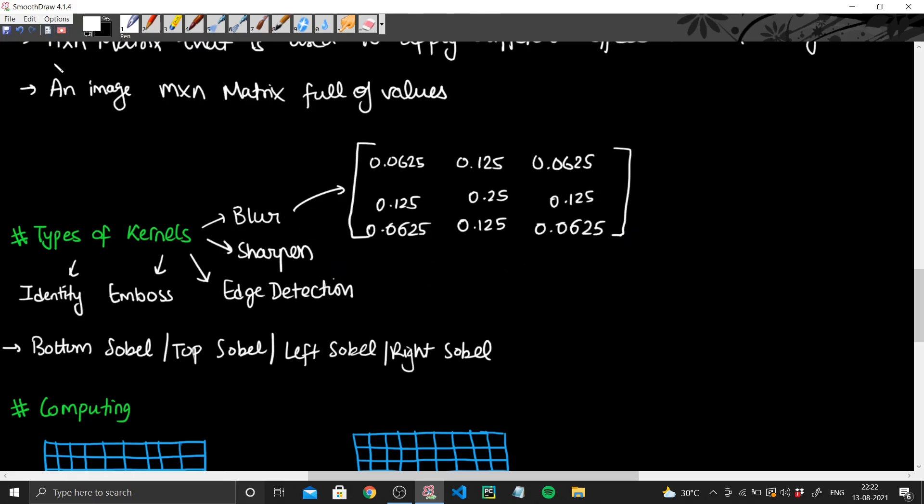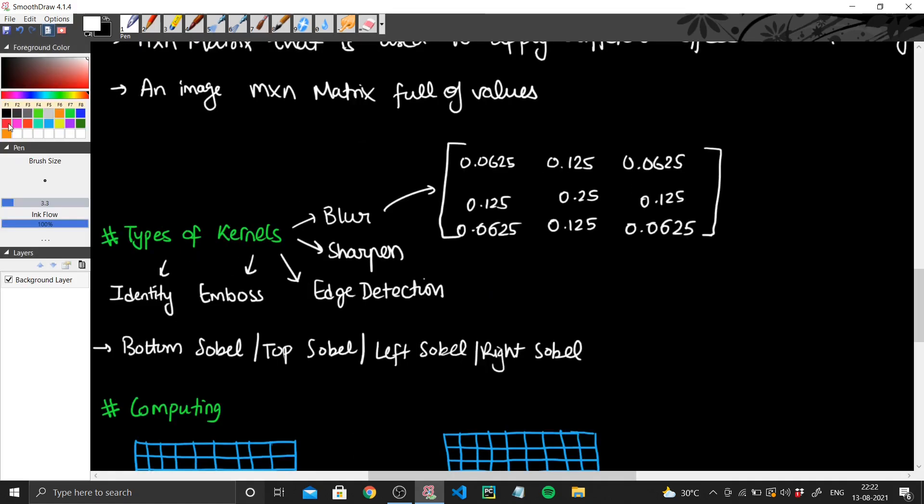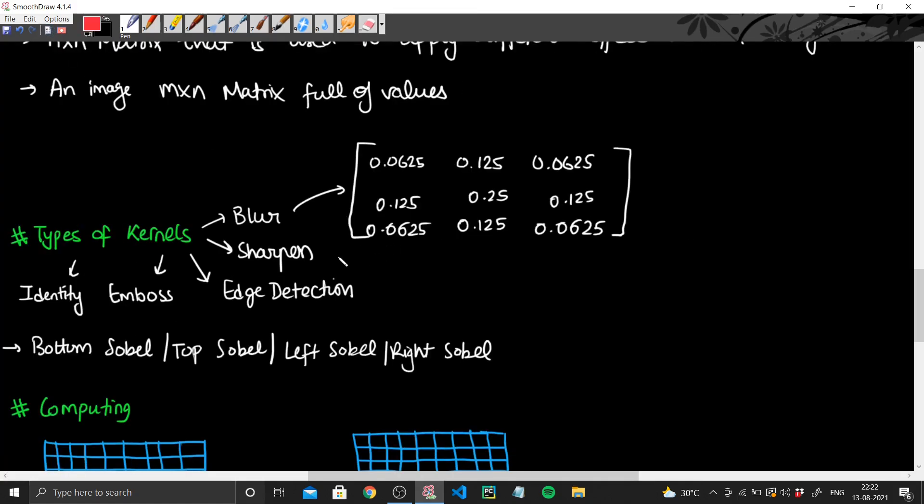Similarly for sharpen, I'll use a different color, maybe let's say I'll use red. So for sharpen the matrix that we use is this one: 0, minus 1, 0, minus 1, 5, minus 1, 0, minus 1, 0. This is the kernel that we use for sharpen.